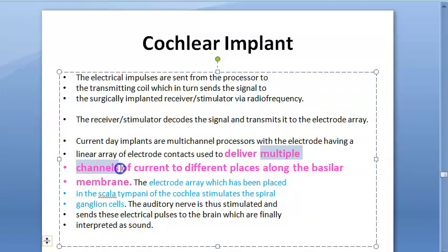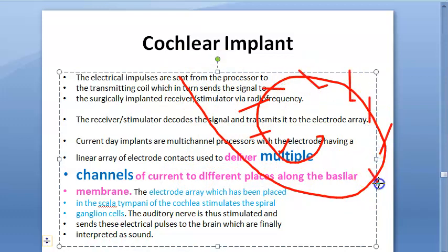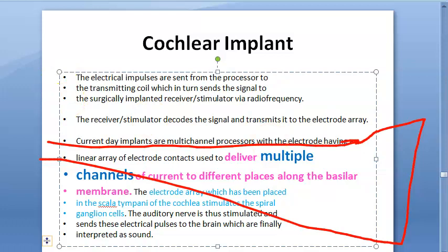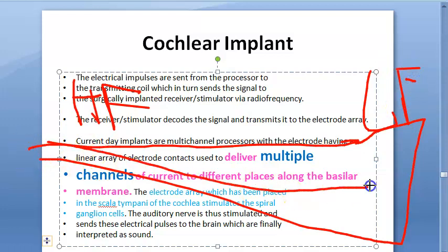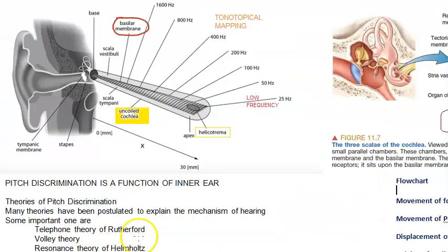The electrode array delivers multiple channels - earlier they had single channel, but now they use multiple channels. You saw 16 contact sites. At different points on the basilar membrane it delivers multiple channels of current to different places along the basilar membrane. The cochlea if you uncoil has a basilar membrane with high frequency to low frequency mapping - this is the tonotopical mapping. This is the traveling wave theory.